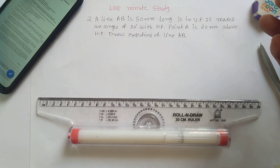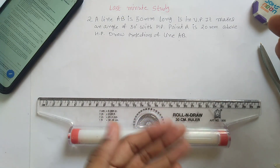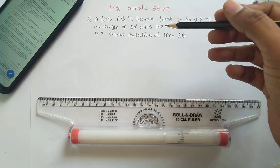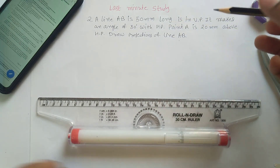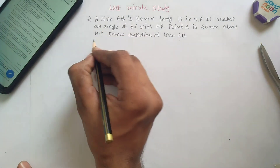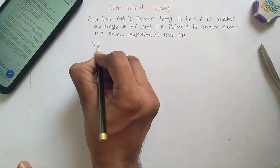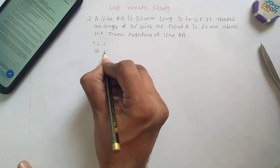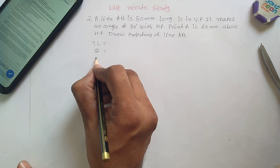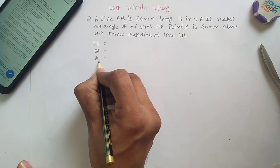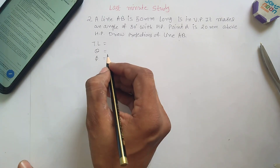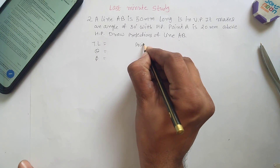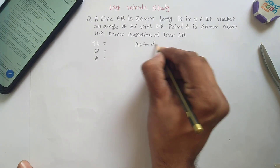Sheet number three, problem number two. This problem belongs to projection of line. Whenever you solve any problem related to projection of line, you have to find out some key data: first, the true length of the line; then theta, the inclination angle with respect to HP; phi, the inclination angle with respect to VP; and the position of the end points.